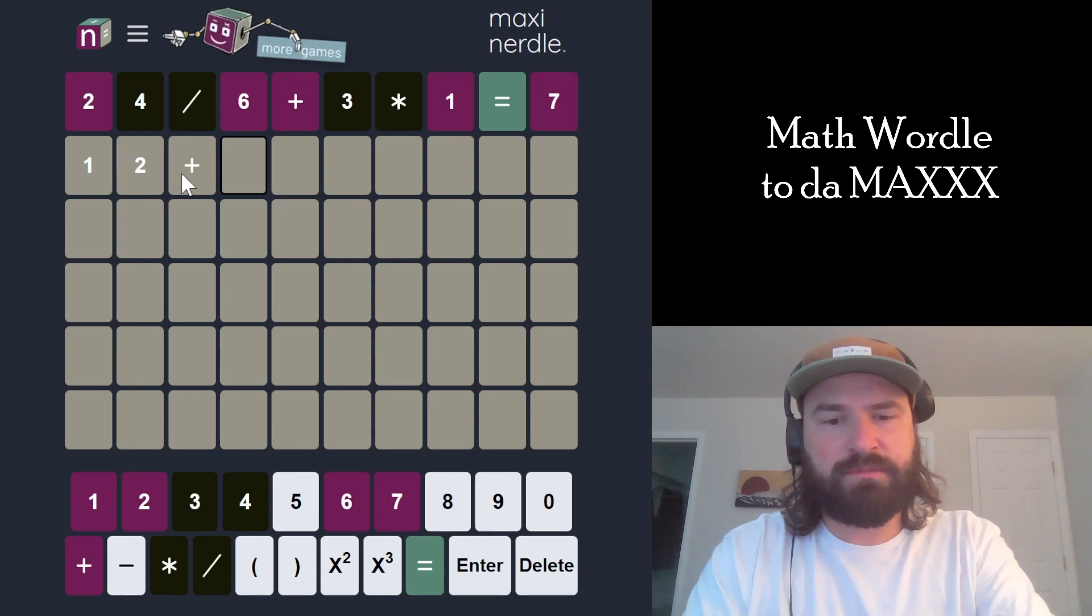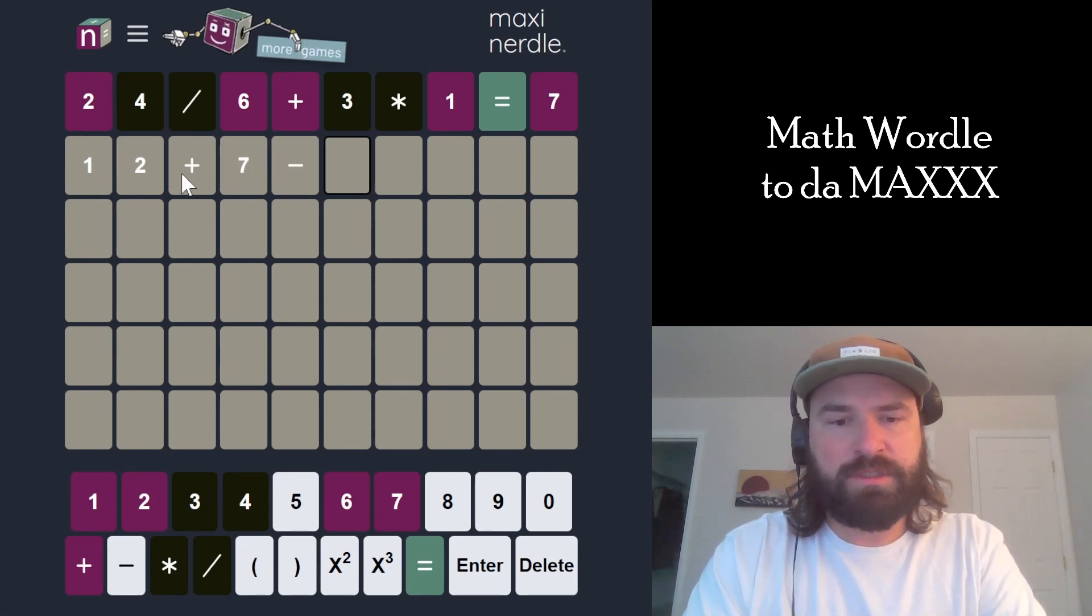So let's just do plus 7 minus 6, so that's 13 minus 8 is 5. That's perfect.